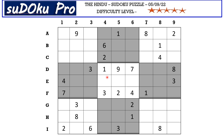In the central block there are only three empty cells and the missing numbers are 5, 6 and 8. So a triplet of 5, 6 and 8 goes here. There is a 6 blocking from column 4, so E4 takes 5 or 8. The other two cells each take 5, 6 or 8.